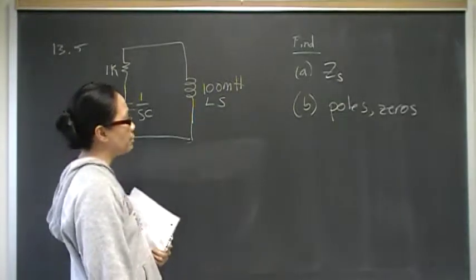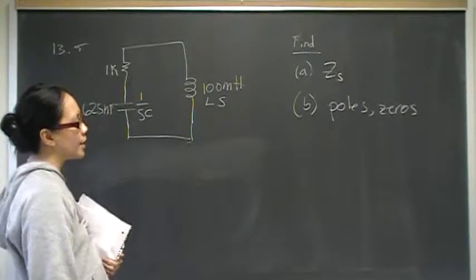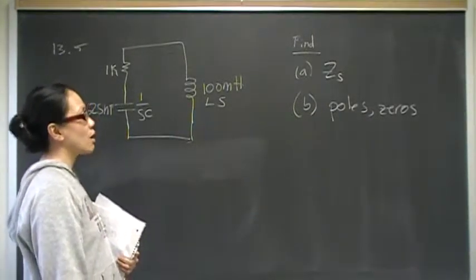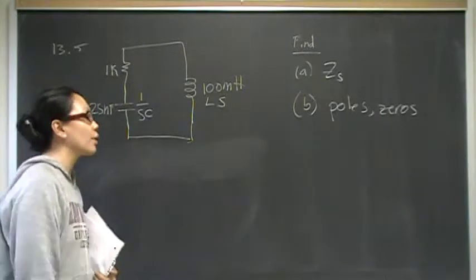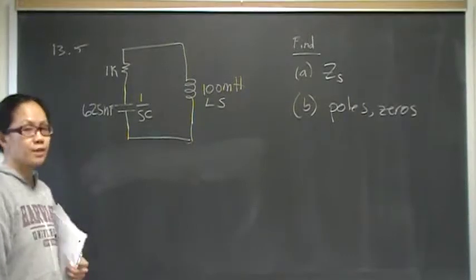In part B, poles and zeros. Poles are when the denominator, all the points where the denominator is zero, and zeros are when the numerator is zero. So, go ahead and pause the video and try that, and unpause it when you're ready.